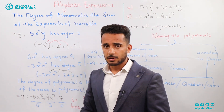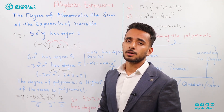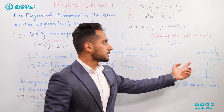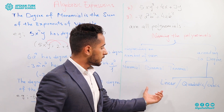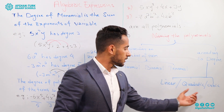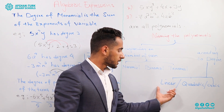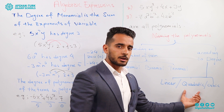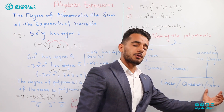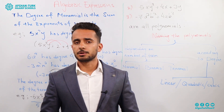According to the degree, we also give special names to polynomials. If the degree of a polynomial is 1, we call it a linear polynomial. If the degree is 2, it is a quadratic polynomial. And if the degree is 3, it is a cubic polynomial. That's enough for today — we will continue in the next session. Thank you for listening.